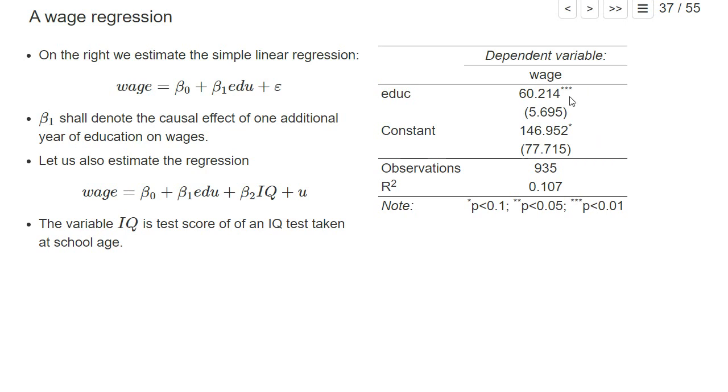So the interpretation would be one additional year of education increases our prediction of the average monthly wage by $60. Not so much, but it's also relatively old data we are looking at.